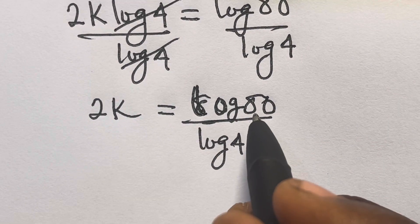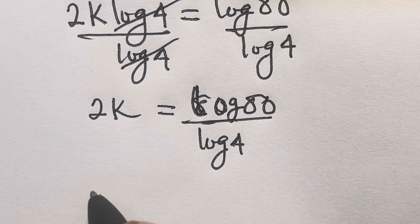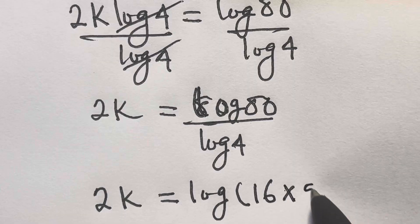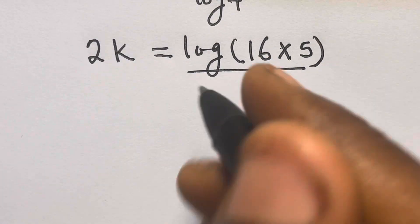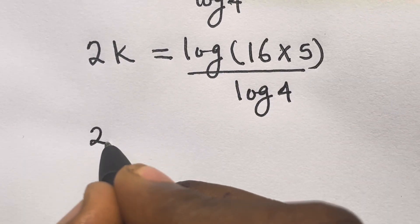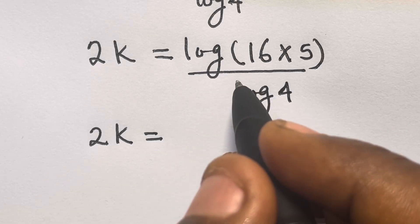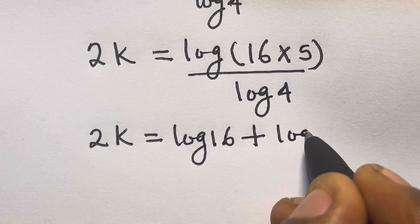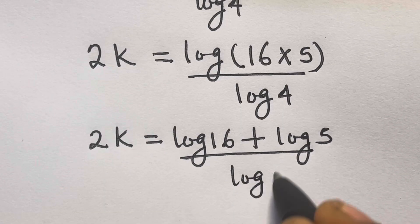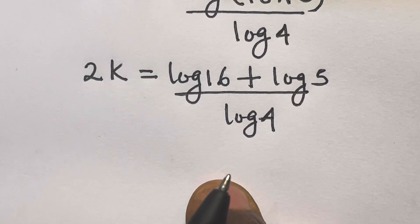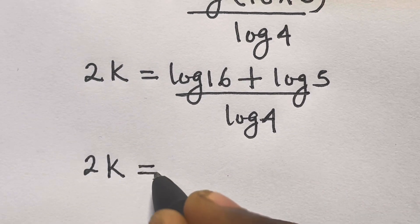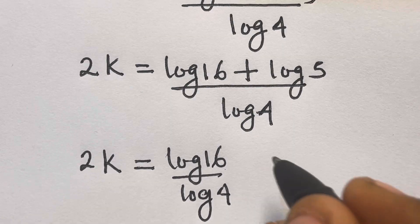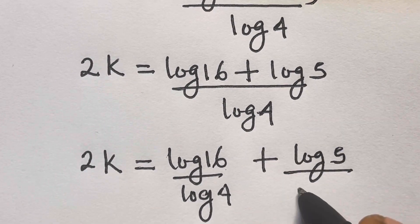We can express 80 as the product of 16 and 5. So we have 2k equals log(16 × 5) divided by log 4. From the law of logarithms, this becomes log 16 plus log 5, all divided by log 4. So 2k equals log 16 divided by log 4, plus log 5 divided by log 4.